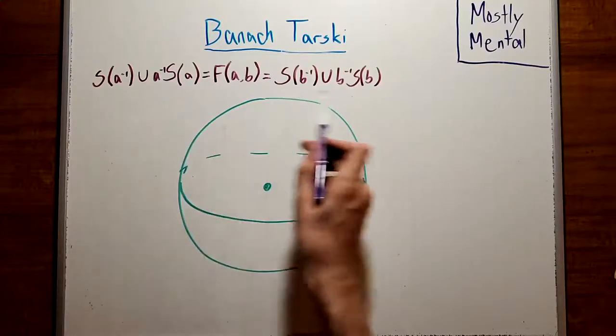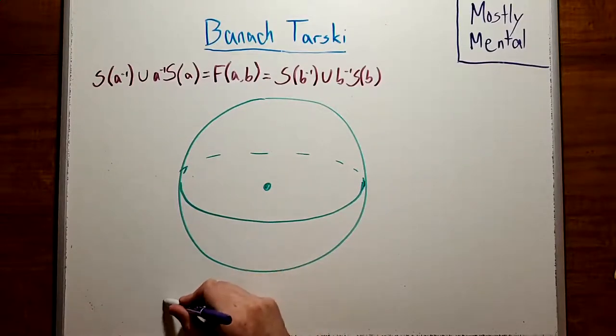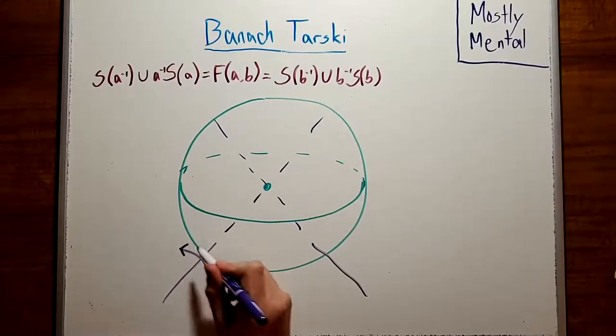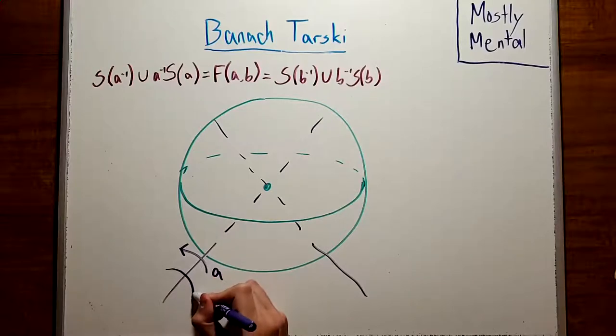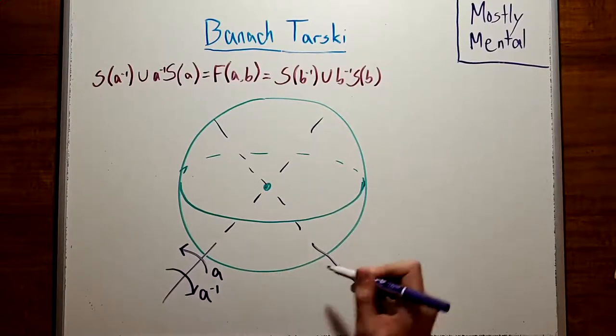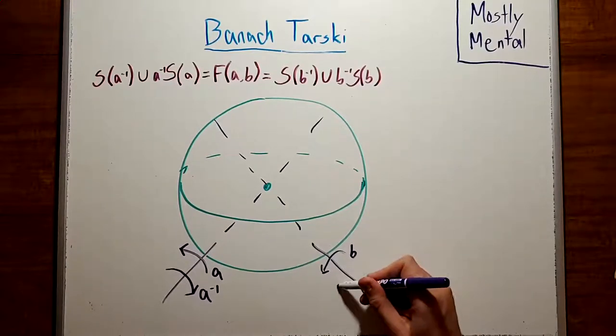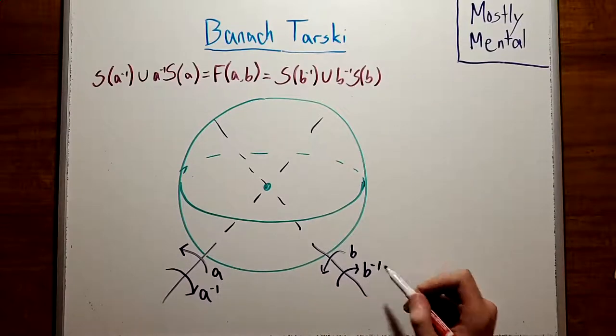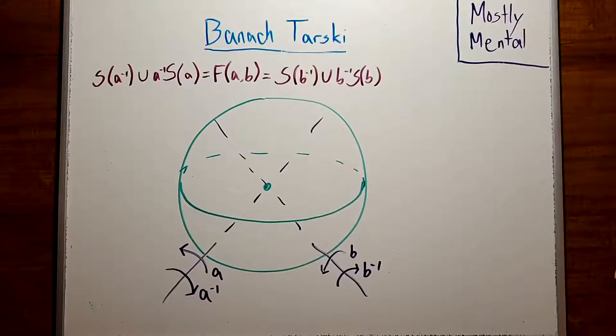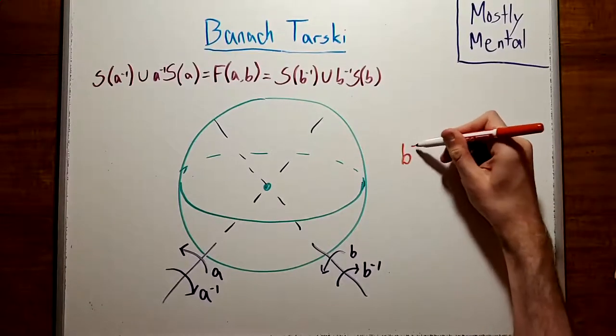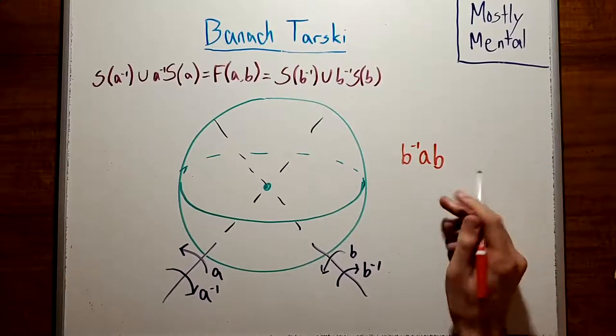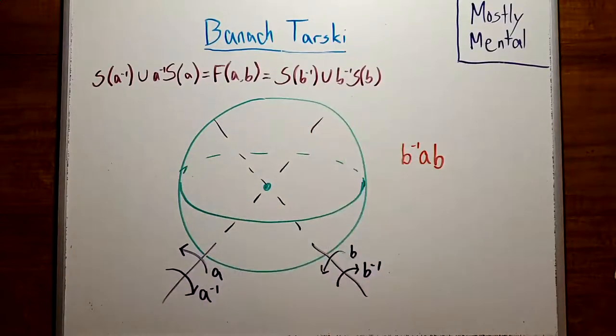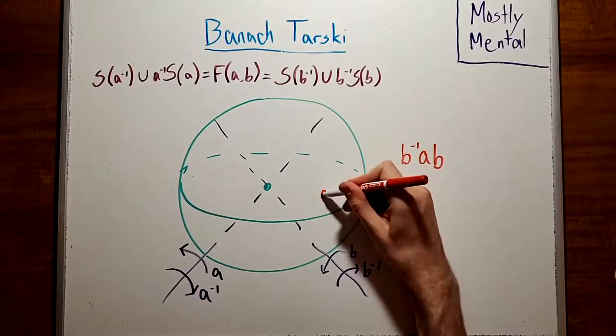Now let's translate this algebra into geometry. We'll take a sphere and pick two axes passing through the center. We'll call a rotation by some fixed amount around this first axis, A, and a rotation by the same amount in the opposite direction, A inverse. And similarly, rotations by the same amount around the other axis, will be B and B inverse. Then a word made up of these four letters will correspond to a series of rotations reading off from right to left. So, for example, B inverse AB means first rotate by B, then rotate by A, and then rotate by B inverse. It's a little tricky to follow the whole sphere, so let's just look at what happens to a single point.